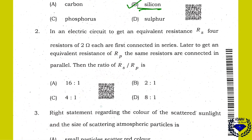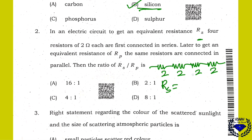In an electric circuit to get an equivalent resistance RS — RS means connected in series. So when an equivalent resistance RS with 4 resistors, that means 2, 2, 2, 2 — the total resistance is 2 plus 2 plus 2 plus 2. It is 8 ohm. So this is resistance in series.